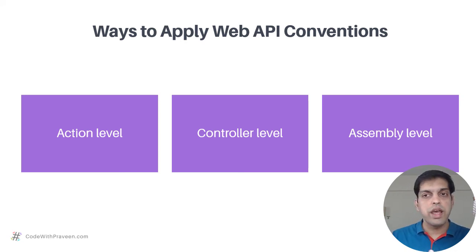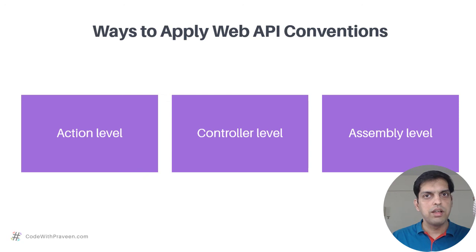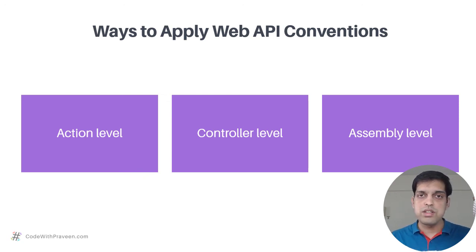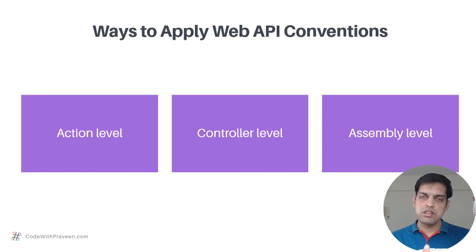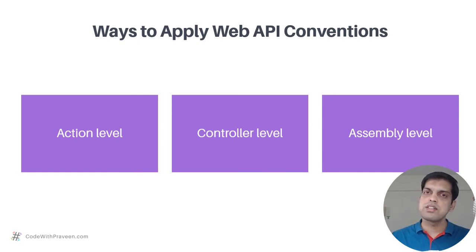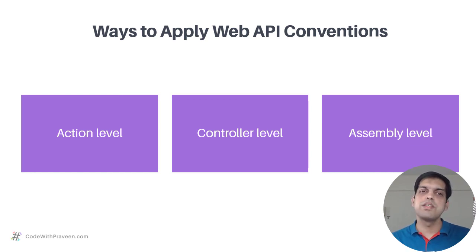Finally, you have the assembly level, where once you enable the convention at the assembly level, it applies to all action methods present in all controller classes within that assembly. Having covered Web API Conventions, their advantages, and the various application approaches, the next lesson will look at how to apply these at all three levels — action, controller, and assembly level.